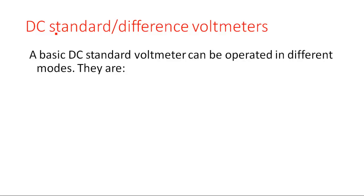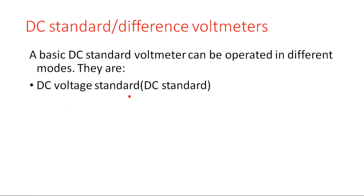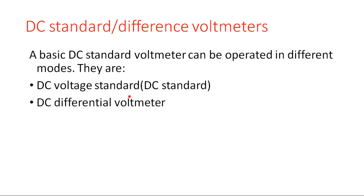In this lecture we are going to see what are the DC standard or difference voltmeters. In the previous lecture we have seen the DC differential voltmeter. Now we are going to see the various modes of operation of DC difference voltmeters. There are three types of modes: first is DC voltage standard, second is DC differential voltmeter, and third is DC voltmeter conventional.